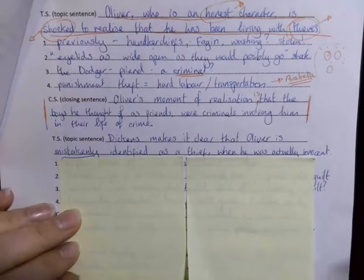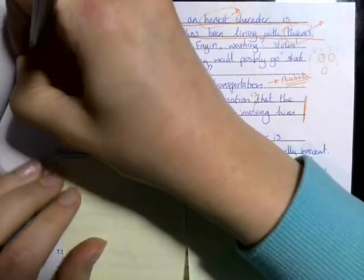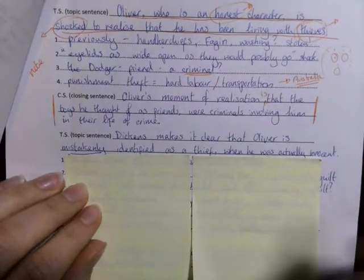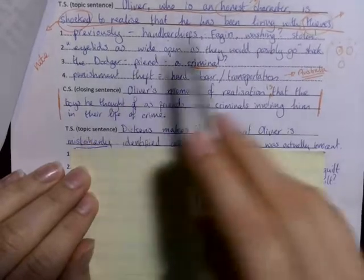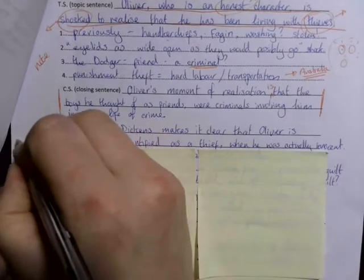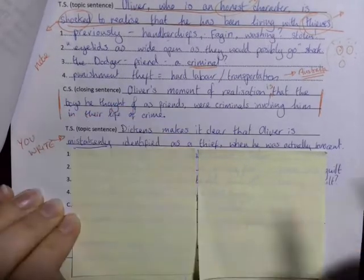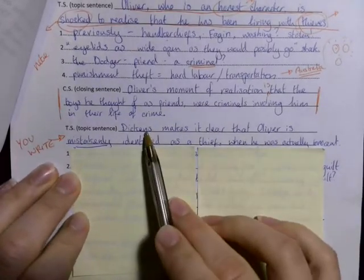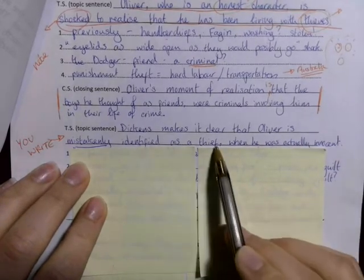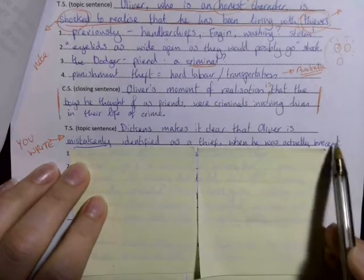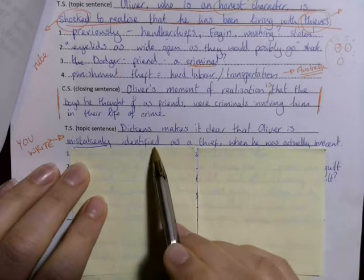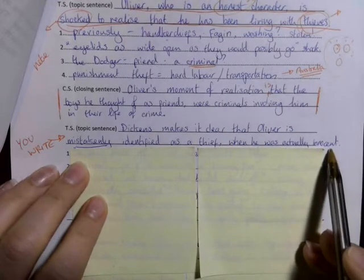Do you get the idea? It's not too tricky, especially as I'm asking you just to do these bits in note form. I'm not going to ask you to write any of them up as a full paragraph this week. So I wonder if you could have a go at this one for me. You're going to need either this handout or just some plain paper and you need to write this topic sentence yourself, copy it out: 'Dickens makes it clear that Oliver is mistakenly identified as a thief when he was actually innocent.'